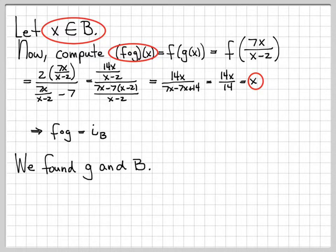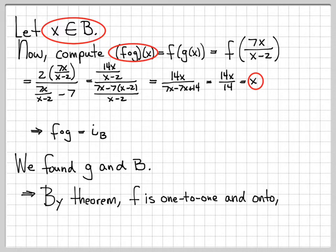So we found a function g and a set B with the required properties. By the theorem, we have shown that f is a one-to-one and onto function because g has the desired properties. Specifically, not only do we know f is bijective, we also know by the theorem that g is the inverse function of f. This is a really neat way to prove that a function is one-to-one and onto by constructing the inverse function g and the appropriate set B.